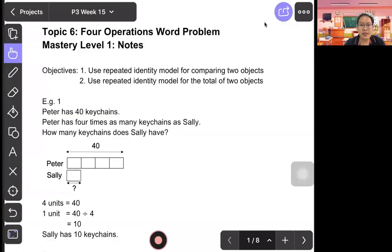Hello, I'm Mr. Tan. Today we are learning Topic 6: Four Operations Word Problem. In mastery level 1, we use repeated identity model for comparing two objects and use repeated identity model for the total of two objects.